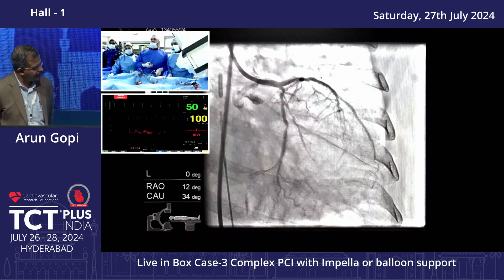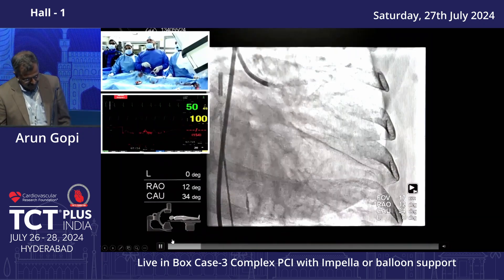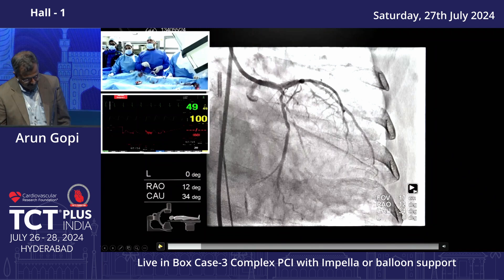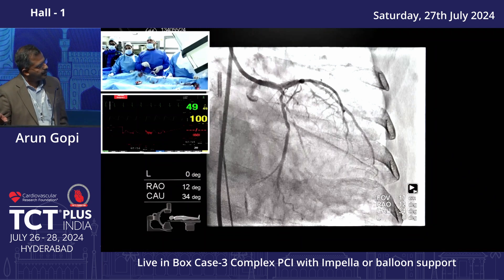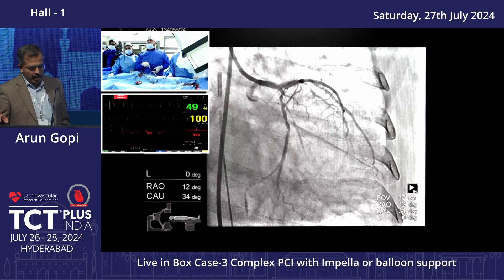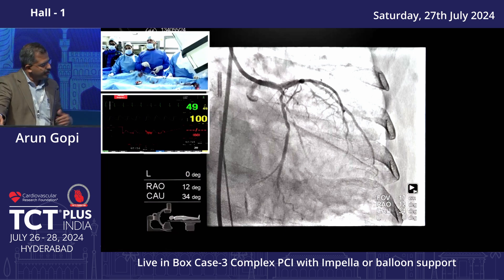Can I pause here for a second? My question — just for highlighting the point — why did you choose a 30cc IABP and not a 50cc IABP? You need better support; why 30cc versus 50cc, just for the audience to be aware? The person was short, so the 30cc IABP was selected based on the patient's height.